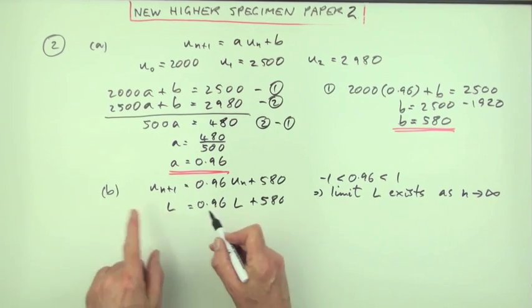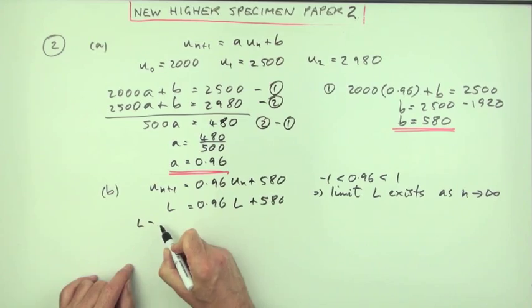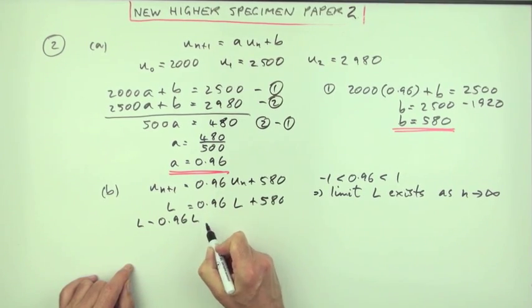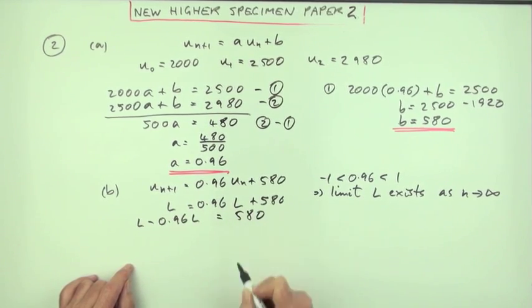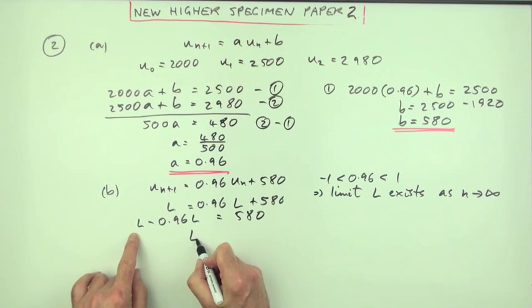Then it's stable. So you could take that across and subtract it. So you've got the limit minus 0.96 times the limit is 580. So taking a common factor of L.